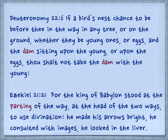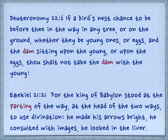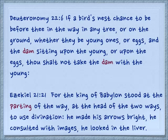Two other small translations: in Deuteronomy 22:6, if a bird's nest chance to be before thee in the way, whether they be young ones or eggs and the dam — the female of the bird — sitting upon the young or upon the eggs, thou shalt not take the dam with the young. In Ezekiel 21:21, the king of Babylon stood at the parting of the way at the head of the two ways — to use divination he made his arrows bright, he consulted with images, he looked in the liver. Why is this like the mother? The parting of the way — maybe it's the mother road, the main road, and then it's splitting up into a family.